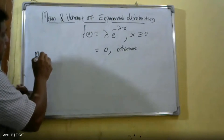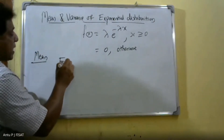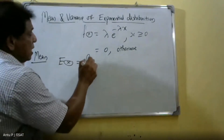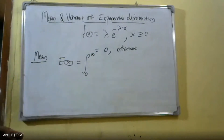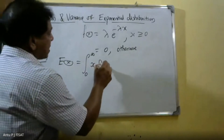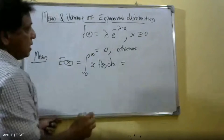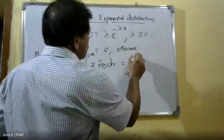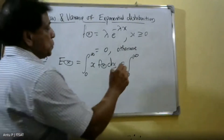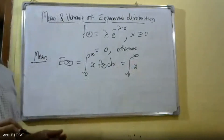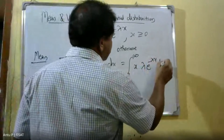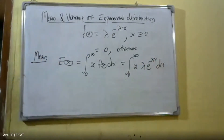First, we find the mean. Mean is equal to E[X], which is the integral from 0 to infinity of x·f(x) dx. Substituting f(x) = λ·e^(−λx), we get the integral from 0 to infinity of x·λ·e^(−λx) dx. We take λ outside the integral.